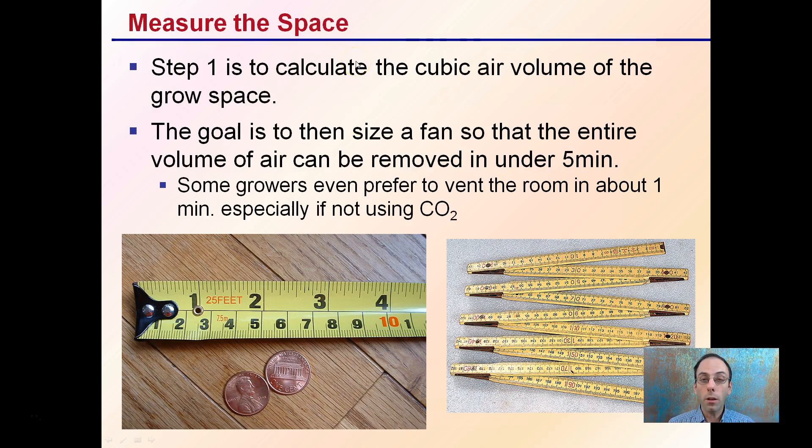Now the key part with an exhaust fan, it's a very important first step, is to calculate the cubic air volume of the grow space. The goal is to then size the fans so that the entire volume of air can be removed in under five minutes. Some growers even prefer to vent the room about every one minute, especially if you're not using carbon dioxide enrichment.